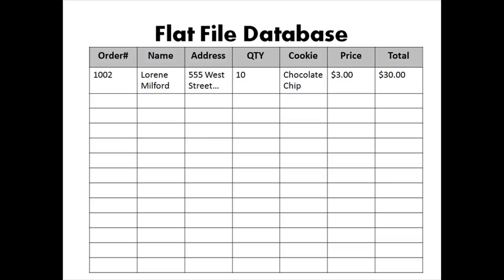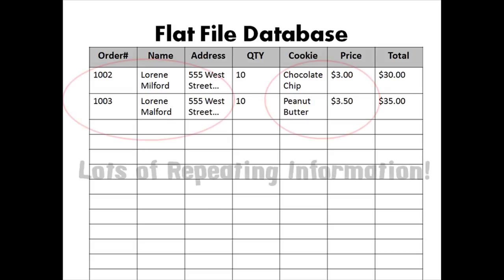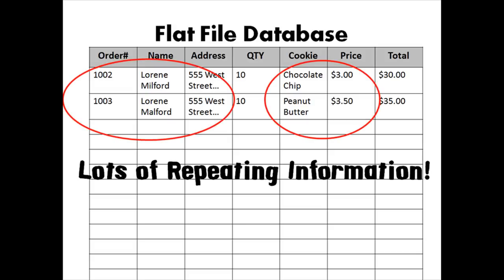Here we have an order placed by someone named Laureen Milford, and she's placed one order for 10 boxes of our chocolate chip cookies. So far so good as far as tracking information goes. But with any business, we're hoping for repeat business. So if Laureen Milford places another order, here's what that'll look like. Organizing information this way means we're going to have a lot of repeating information.